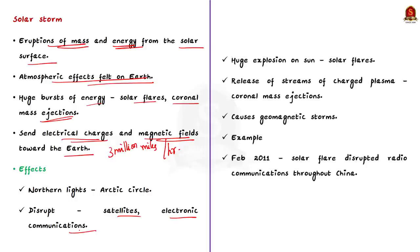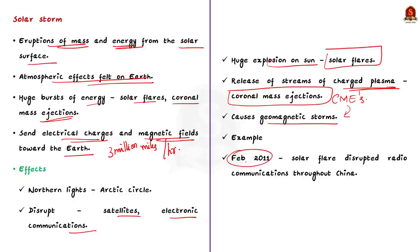Solar storms start with a huge explosion on the sun. These explosions, also called solar flares, can be as powerful as billions of nuclear bombs. Solar flares usually go hand-in-hand with the release of huge streams of charged plasma that travels at millions of miles per hour. These streams are called coronal mass ejections or CMEs. When CMEs hit the Earth, they can cause geomagnetic storms that disrupt satellite and electrical power grids. For example, in February 2011, a CME produced by a powerful solar flare disrupted radio communications throughout China. Some experts believe a major solar storm could cause over 20 times the economic damage of a worst hurricane.